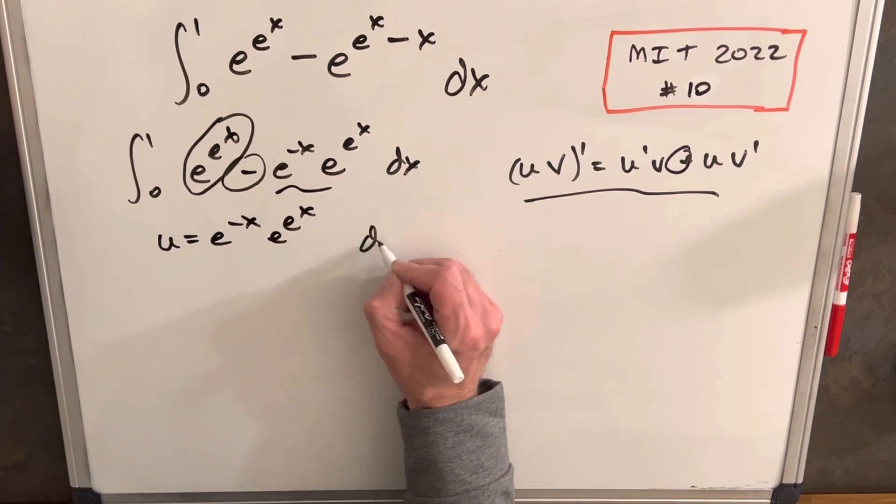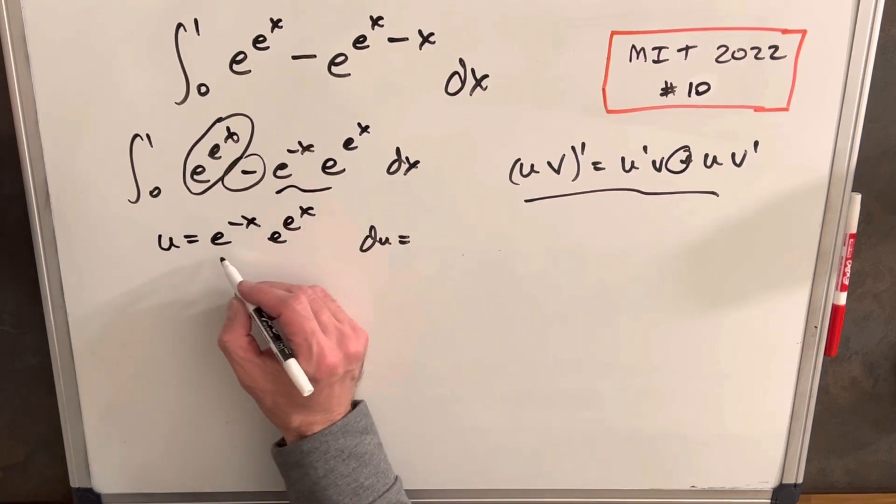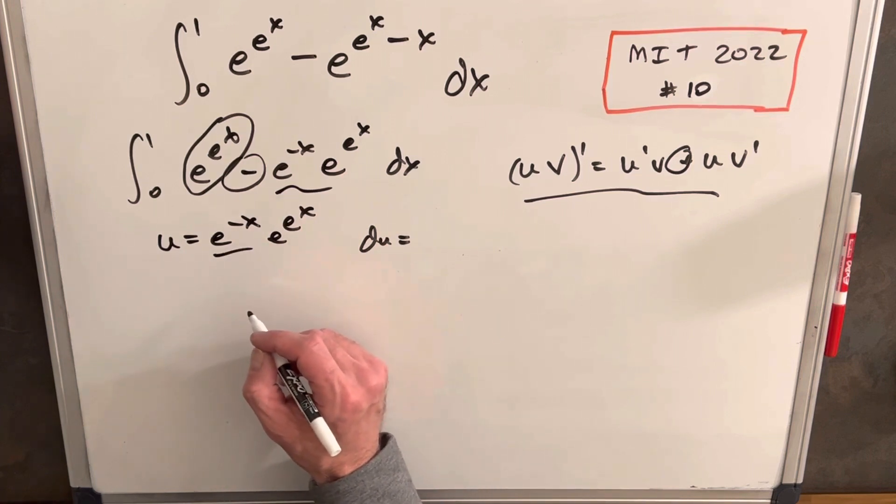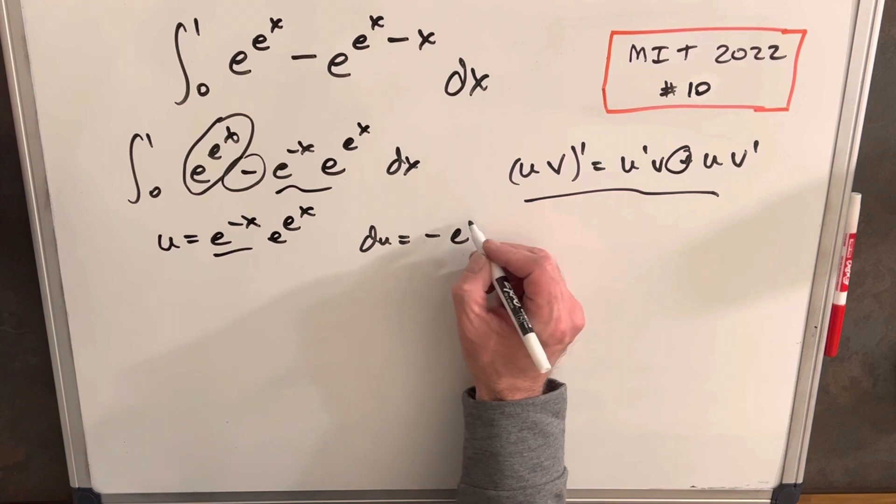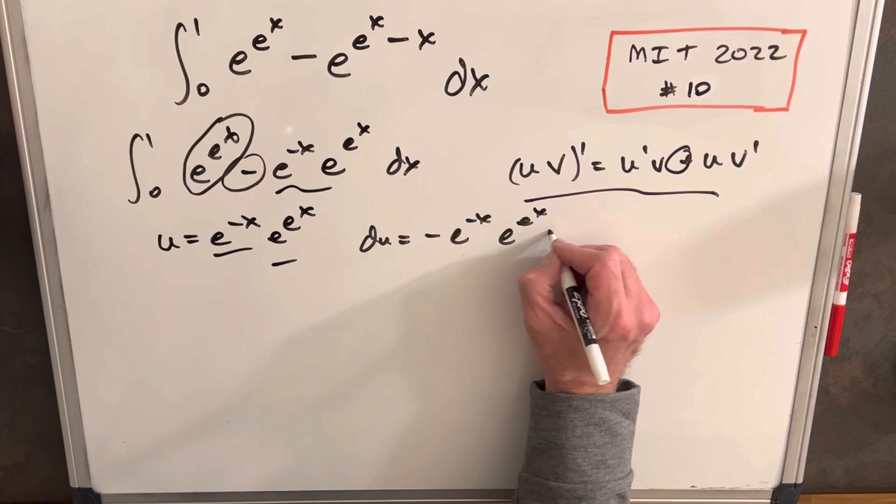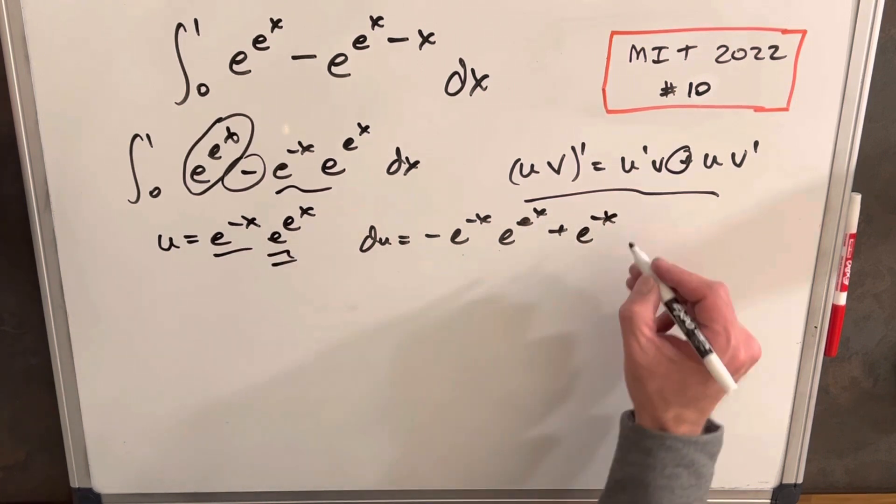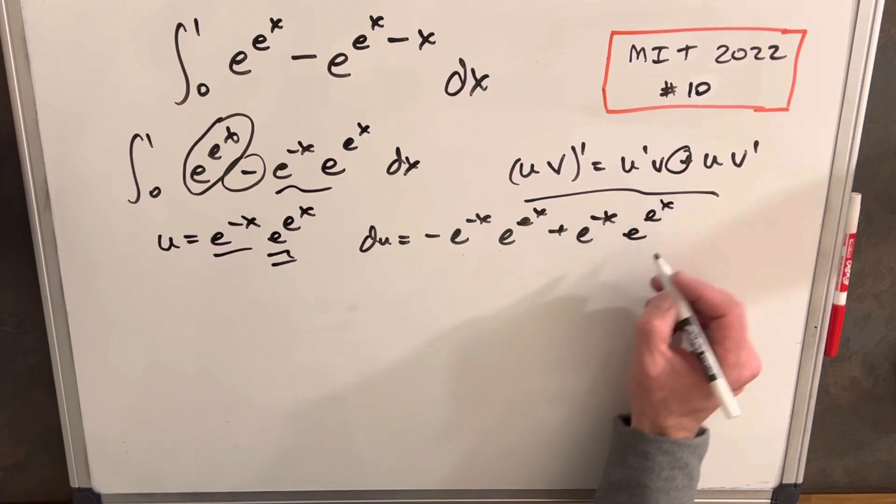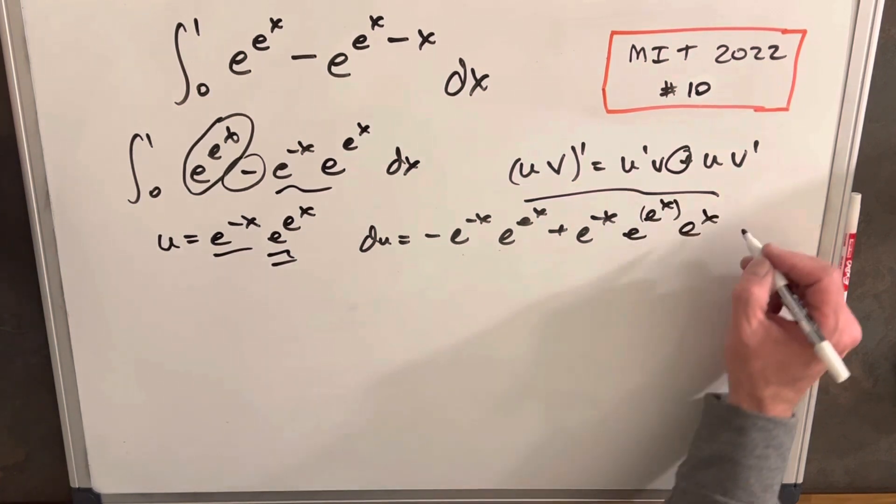When we differentiate this, we use the product rule. We differentiate e^(-x) and get -e^(-x). We keep this term, so we have e^(e^x) plus e^(-x). We differentiate this term and get e^(e^x). The derivative of this is e^x dx.